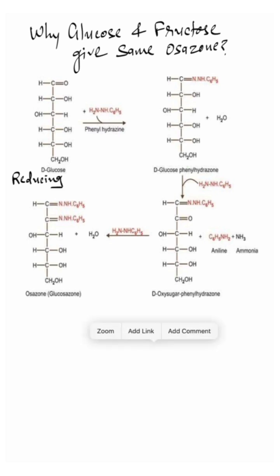Only reducing sugars form osazone. When glucose is boiled with phenylhydrazine, it will react with the first carbon of glucose and form phenylhydrazone. Then second molecule of phenylhydrazine reacts and forms aniline and ammonia. And subsequently third molecule of phenylhydrazine reacts with second carbon of glucose and forms osazone which is needle shape.